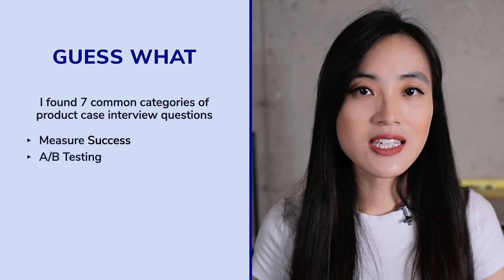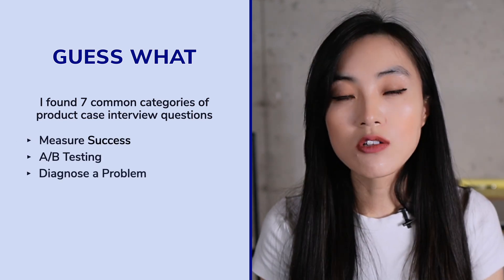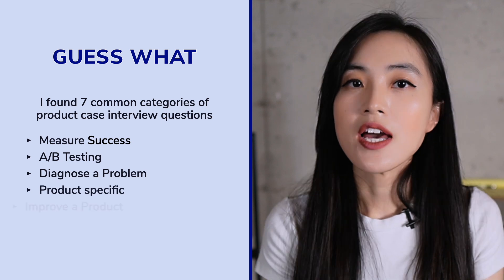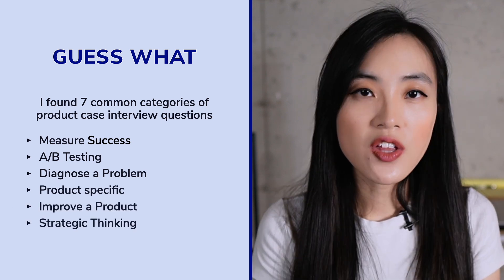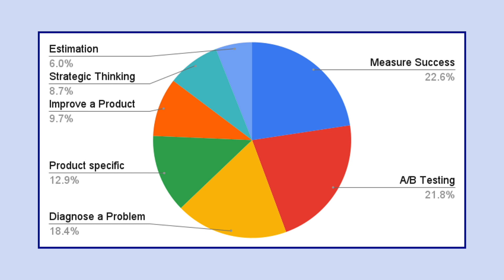I found seven common categories of product case interview questions: measure success, A/B testing, diagnose a problem, product specific, improve a product, strategic thinking, and estimation. I've even created a pie chart to show you the breakdown of interview questions by category. By understanding these categories and practicing problems for each one, you'll be much better prepared for your next product case interview.